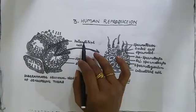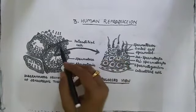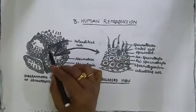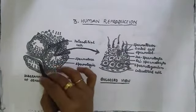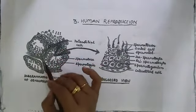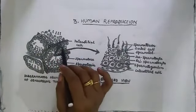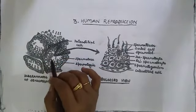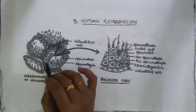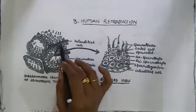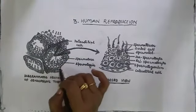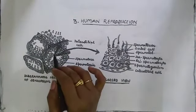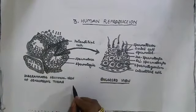Each lobule is filled with connective tissue and contains 1 to 3 seminiferous tubules. The seminiferous tubule is the site of spermatogenesis.